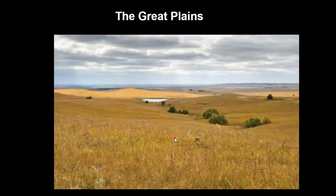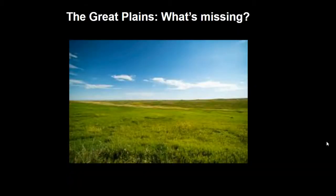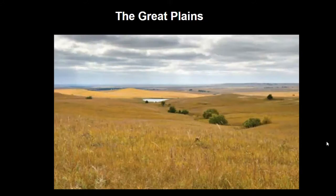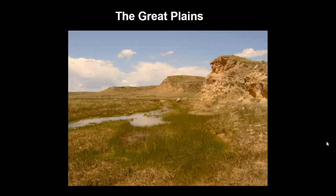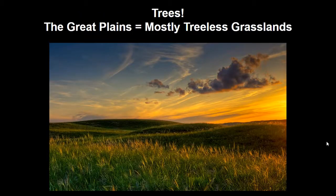Here is what the Great Plains looked like. Looking at these photographs, what's missing? The answer is trees. This is mostly treeless grassland. It is not desert — plants do grow there, mostly grass. But that one basic resource, trees and wood, was not really available to these Native Americans.